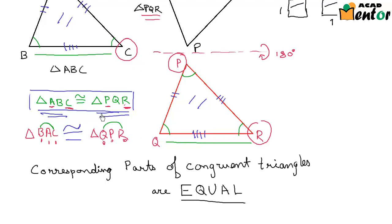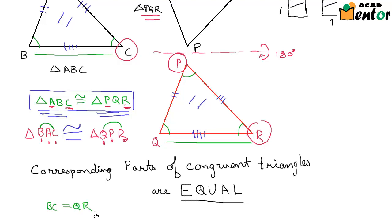Since triangle ABC is congruent to triangle PQR, these are two congruent triangles and these two sides are the corresponding parts, so they would be equal. That means BC will be equal to QR. That was about the sides.